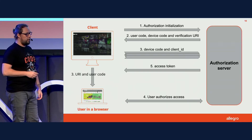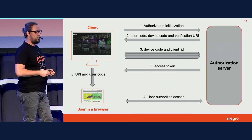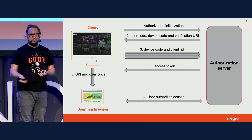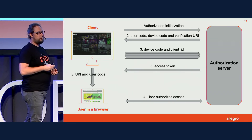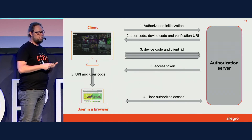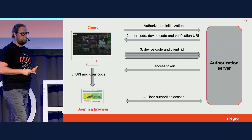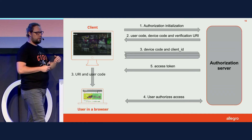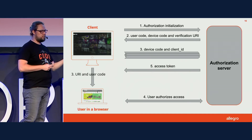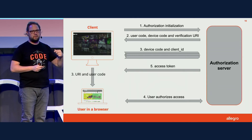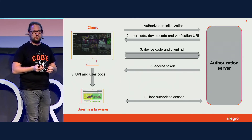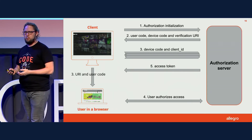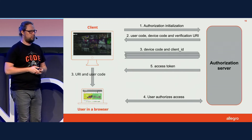Here's how it works. The client — for example, a TV app — initiates the authorization flow by sending a request to the authorization server, and it gets back three pieces of information: the user code, a device code, and a verification URI. It then presents the verification URI and user code to the user. The user goes to another device, browses to the verification URI, and enters the user code. At the same time, the client starts polling the authorization server with the device code, asking if the user has authorized the app yet. When the user authorizes, the client gets back the access token.